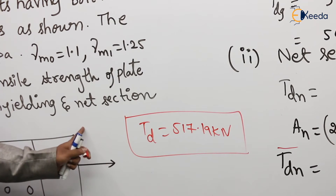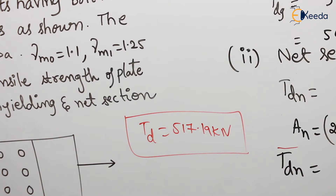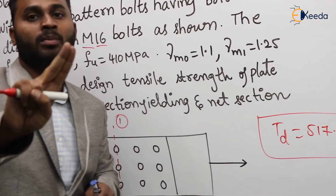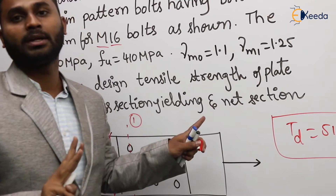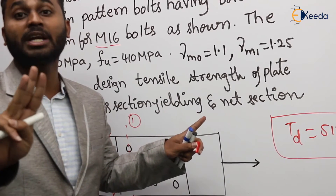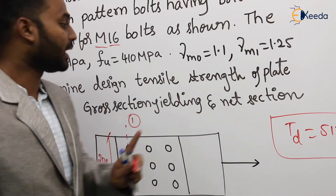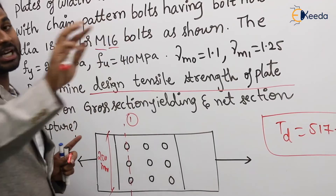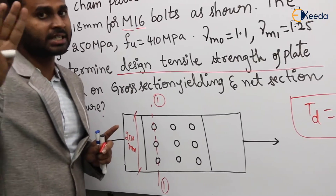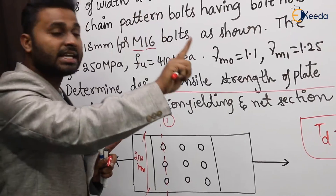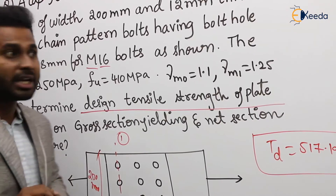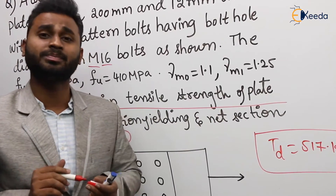If asked to find the design strength of a connection, we need: design shear strength of bolt, design bearing strength of bolt and plate, and design tensile strength of plate — and the minimum of those three is the design strength of the connection. For design tensile strength of the plate specifically, there are three criteria: gross section yielding, net section rupture, and block shear.